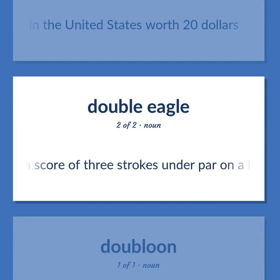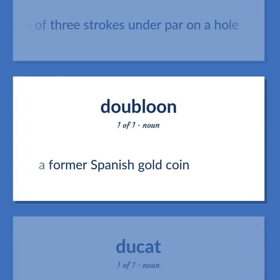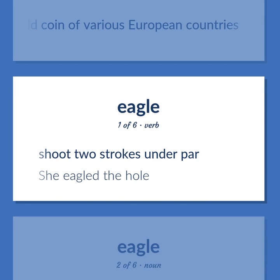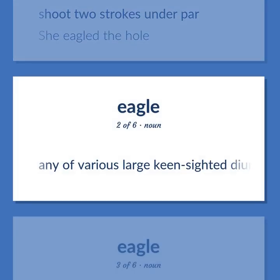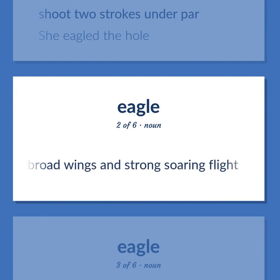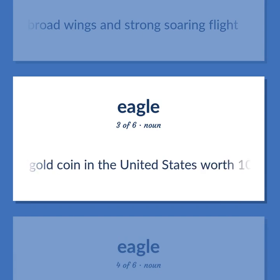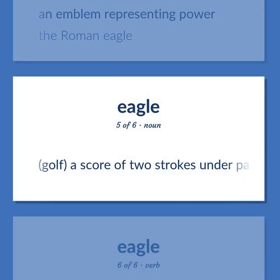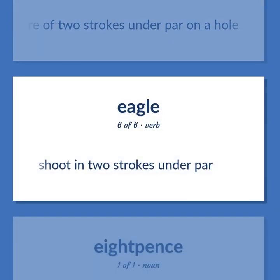Golf: A score of three strokes under par on a hole. A former Spanish gold coin. Formerly a gold coin of various European countries. Shoot two strokes under par — she eagled the hole. Eagle: Any of various large keen-sighted diurnal birds of prey noted for their broad wings and strong soaring flight. A former gold coin in the United States worth $10. An emblem representing power — the Roman eagle. Golf: a score of two strokes under par on a hole. Shoot in two strokes under par.